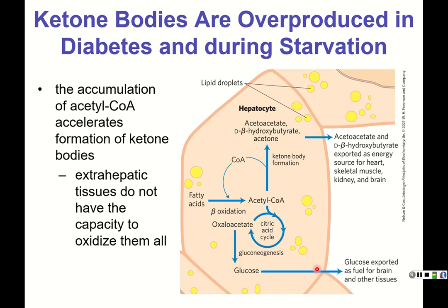Ketone bodies are also used in sports performance — for example, certain professional cycling teams use a ketone drink during and after races to exploit this pathway for energy production. The theory is to use ketone bodies instead of glycogen reserves so athletes can recover better and have more energy during the event, and results seem to support that this works.